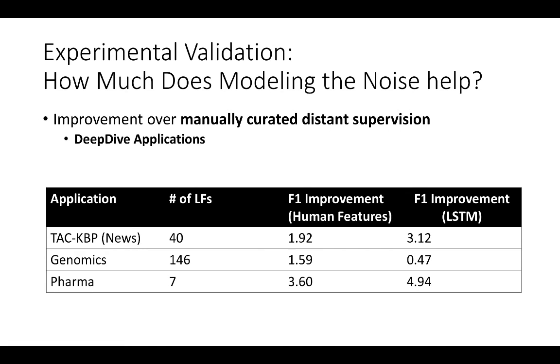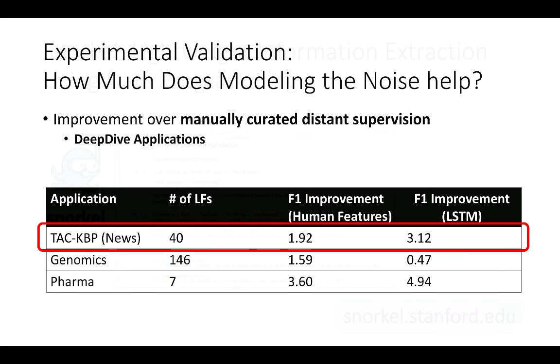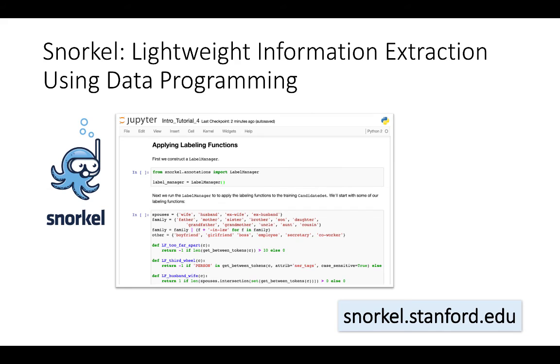Experimentally, we show that on text relation extraction applications, we get improvements over prior distance supervision methods, both using human-created features and deep learning models, including a new competition-winning score on the TAC-KVP 2014 slot-filling challenge. Since writing the paper, we've implemented a new lightweight information extraction framework around data programming called Snorkel, which we've begun validating with users in fields ranging from bioinformatics to political science.